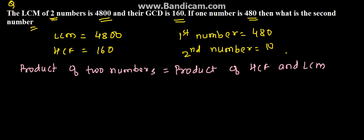So we can use this formula and substitute the given values. We can say that 4800 is the LCM and 160 is the HCF, and one number is given to be 480 and N is the second number.